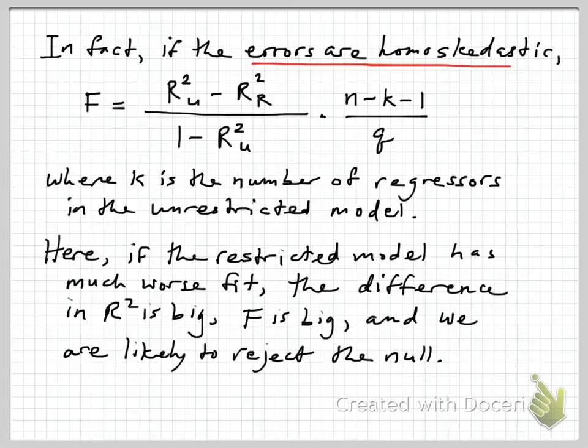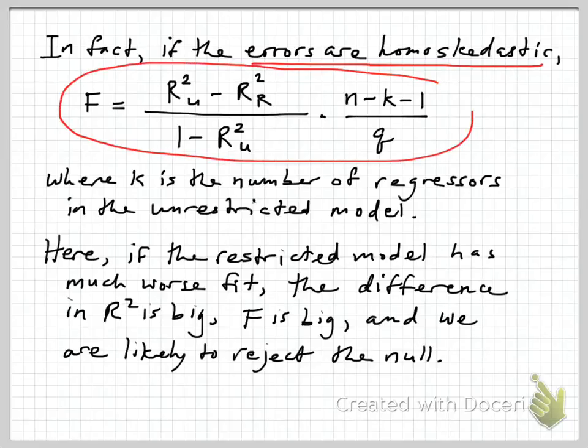In fact, if the errors are homoscedastic, we have a nice simple expression for the F statistic: F = [(R²ᵤ - R²ᵣ) / (1 - R²ᵤ)] × [(n - k - 1) / q], where k is the number of regressors in the unrestricted model. The numerator is R-squared for the unrestricted regression minus R-squared for the restricted. That's the gap—how much difference in fit there is. The denominator scales it to 1 minus the unrestricted R-squared.